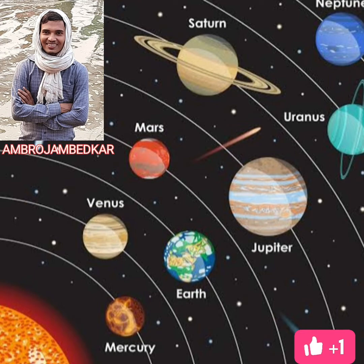Planets revolve around the sun in elliptical orbits. In the solar system, the planet nearest to the sun is Mercury, and the planet farthest from the sun is Neptune — not Pluto. You must be careful about that.